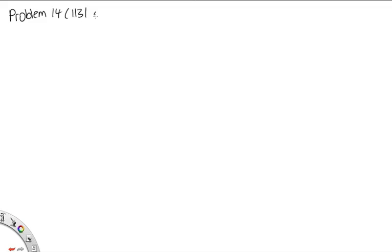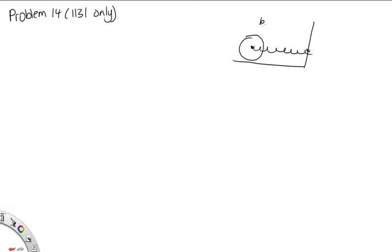Problem 14 — a 1131-only problem. We have a cylinder attached by a spring to the wall. The spring has a spring constant k equal to 2.94 newtons per centimetre. The cylinder rolls without slipping along the surface. When released, the spring is stretched by 23.9 centimetres — that's how far it is from equilibrium. We're asked to find, in part A, the translational kinetic energy, and in part B, the rotational kinetic energy, as it passes through its equilibrium position.